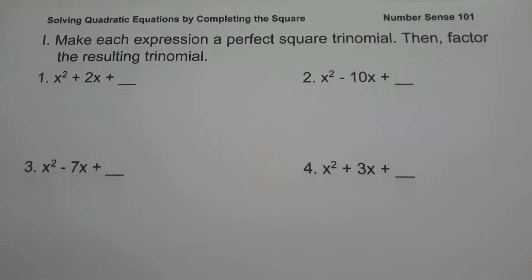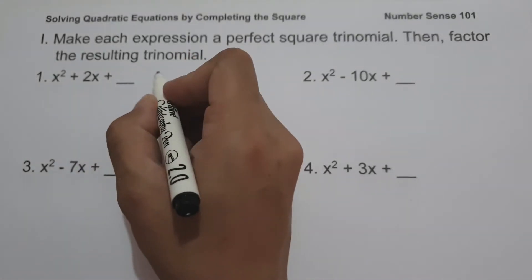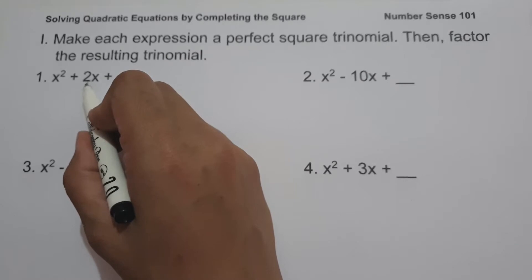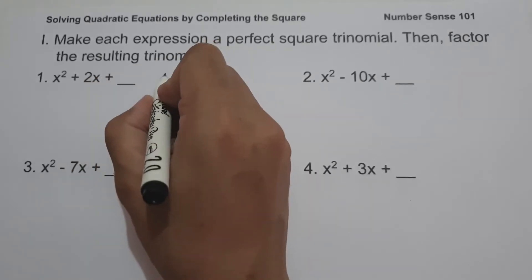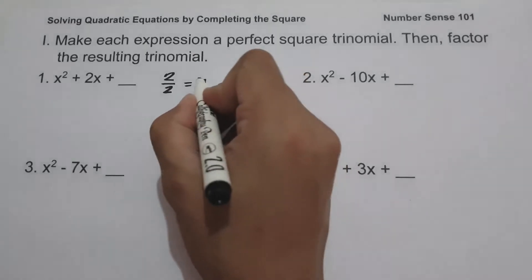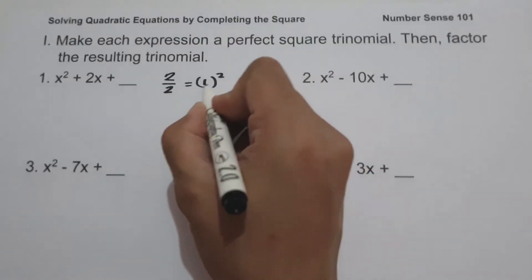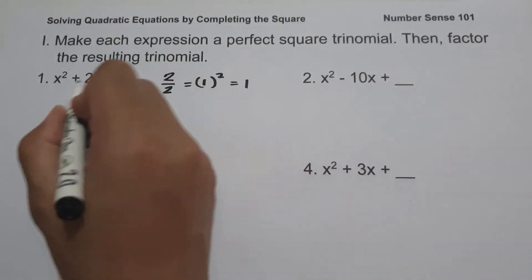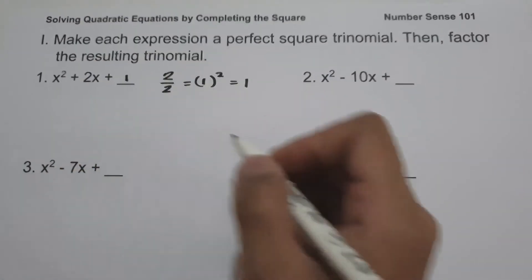On number 1, we have x squared plus 2x plus blank. So what must be the number to make this expression a perfect square trinomial? To do so, take the coefficient of the middle term, which is 2, divide by the constant 2, giving 1, and square the result. So 1 squared is 1. We're going to have 1 to make this expression a perfect square trinomial.